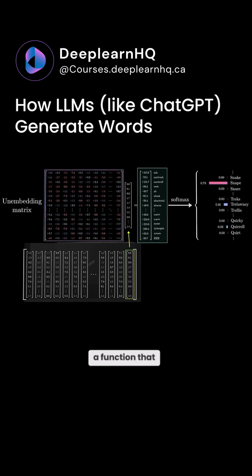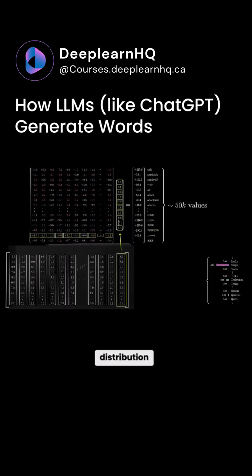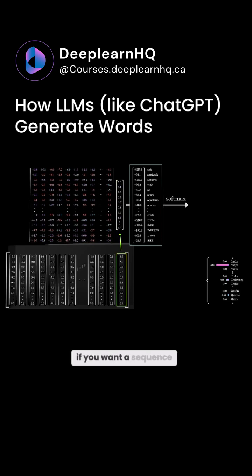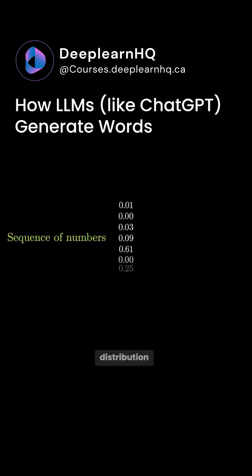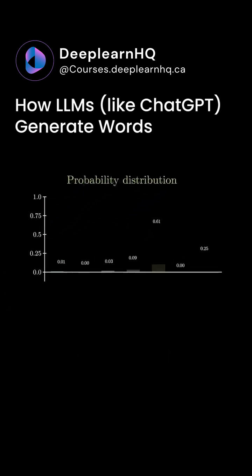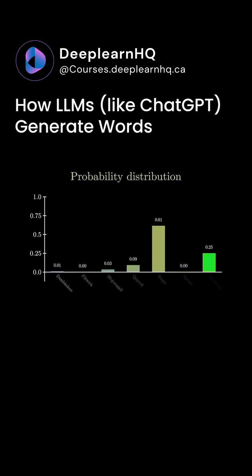Then, there's a function that normalizes this into a probability distribution. It's called softmax. The idea is that if you want a sequence of numbers to act as a probability distribution, say a distribution over all possible next words, each value has to be between 0 and 1, and you also need all of them to add up to 1.